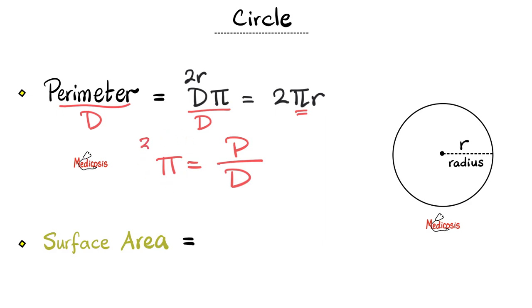Pi is approximately 3.14, just to keep it simple. How about the surface area of the circle? The surface area of the circle is pi, which is about 3.14, times r squared.